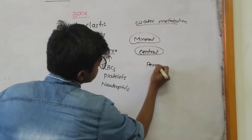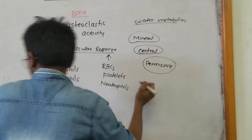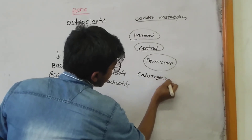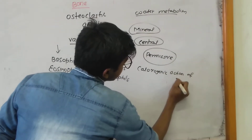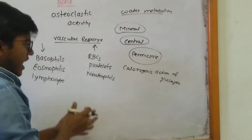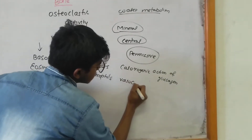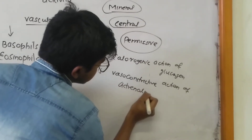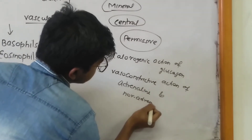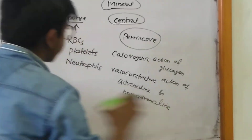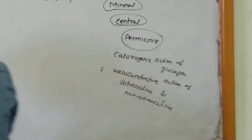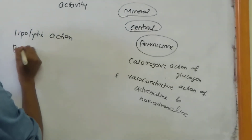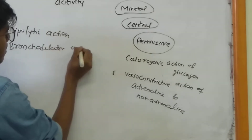Permissive actions mean supporting actions. Glucocorticoids have permissive actions supporting the calorogenic action of glucagon. Similarly, they have permissive action on the vasoconstrictive action of adrenaline and noradrenaline. They are also needed for the lipolytic and bronchodilator actions of catecholamines.